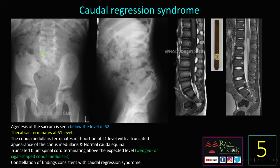The fifth case: you can see there is complete absence of the sacrum below the level of S2, and the thecal sac is seen terminating at the level of S1. The conus medullaris terminates at the mid portion of L1 vertebral level and is truncated, mimicking a cigar shape. Truncated conus medullaris mimicking a cigar shape is classically seen in caudal regression syndrome. Whenever there is complete absence of bone below S2, the thecal sac terminates at S1, and the conus medullaris terminates at mid L1 mimicking a cigar shape, definitely suspect caudal regression syndrome.